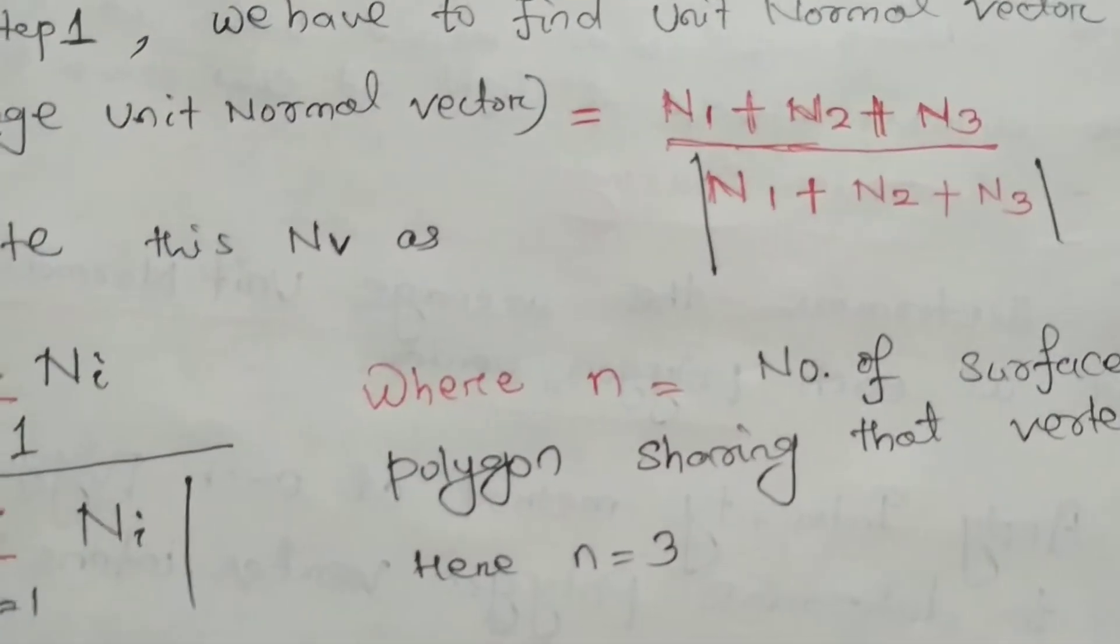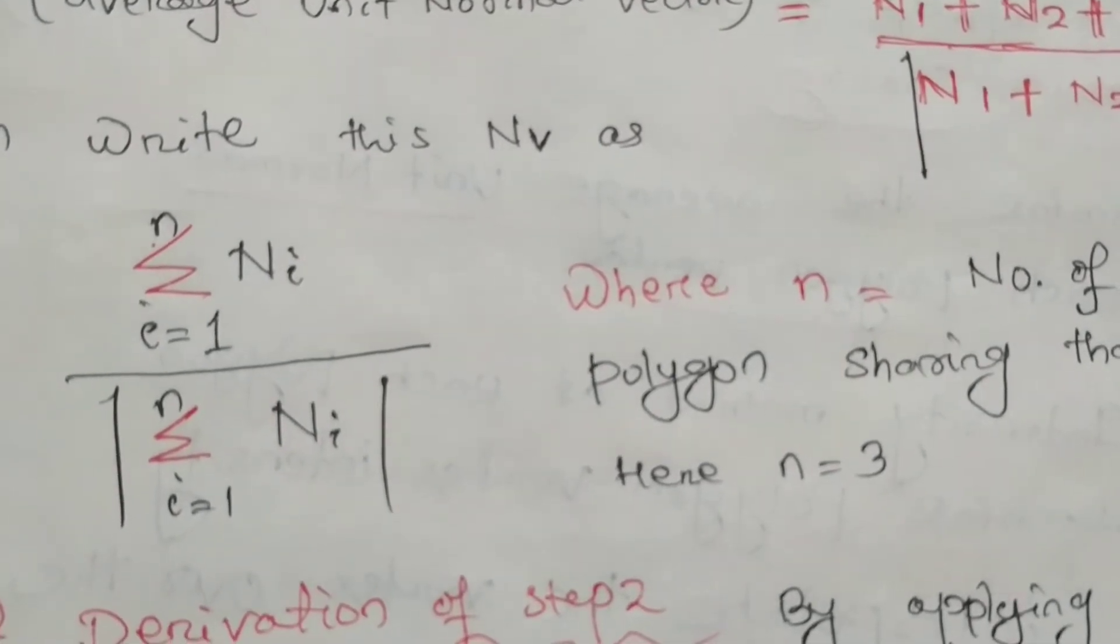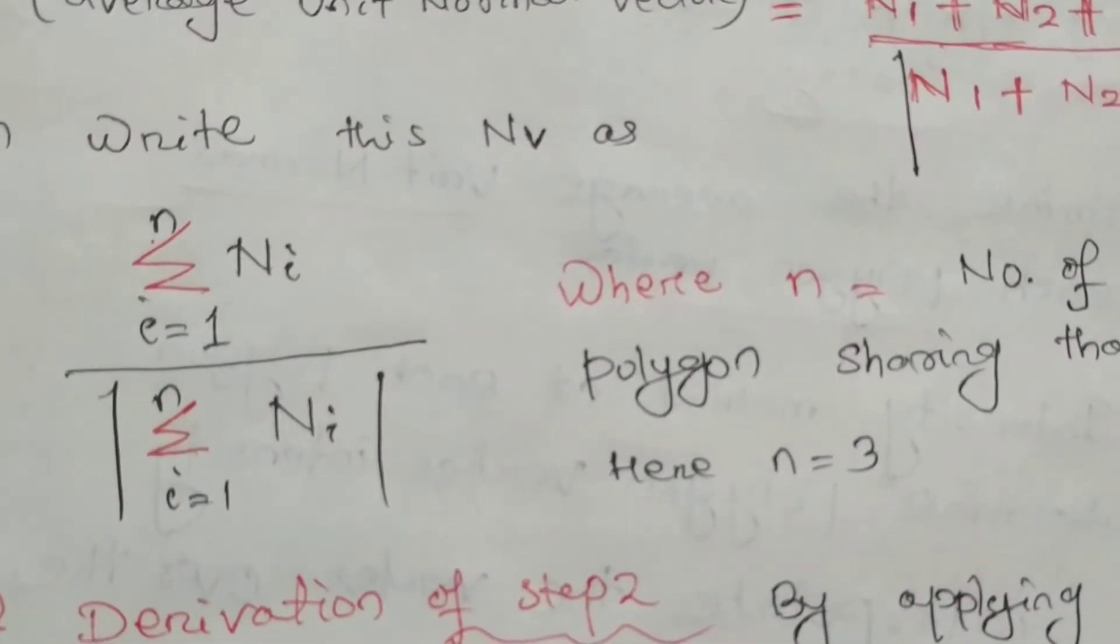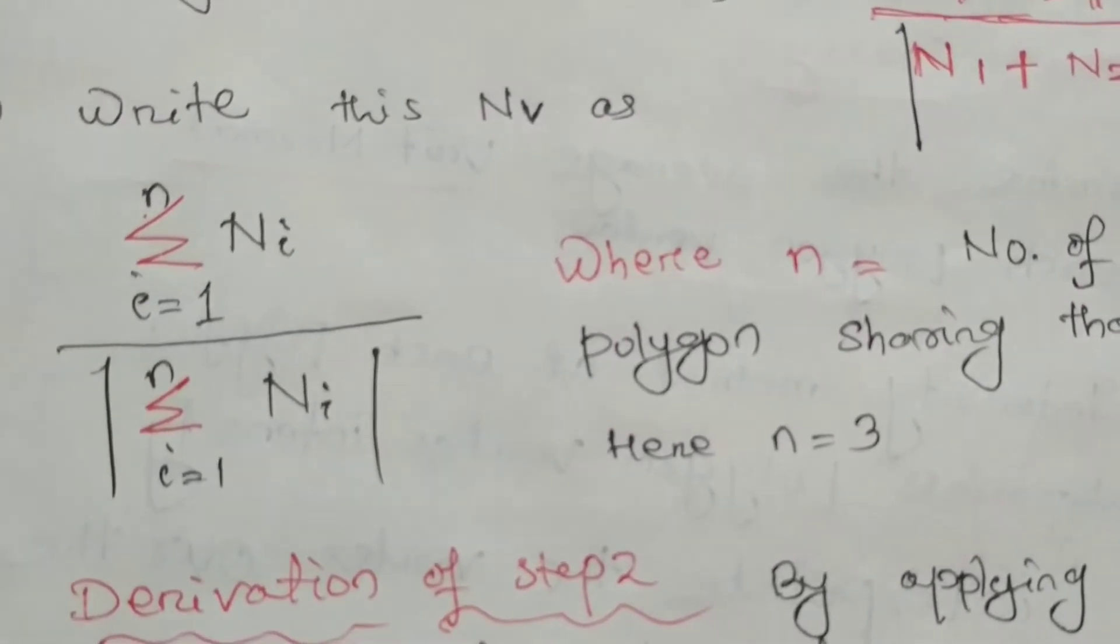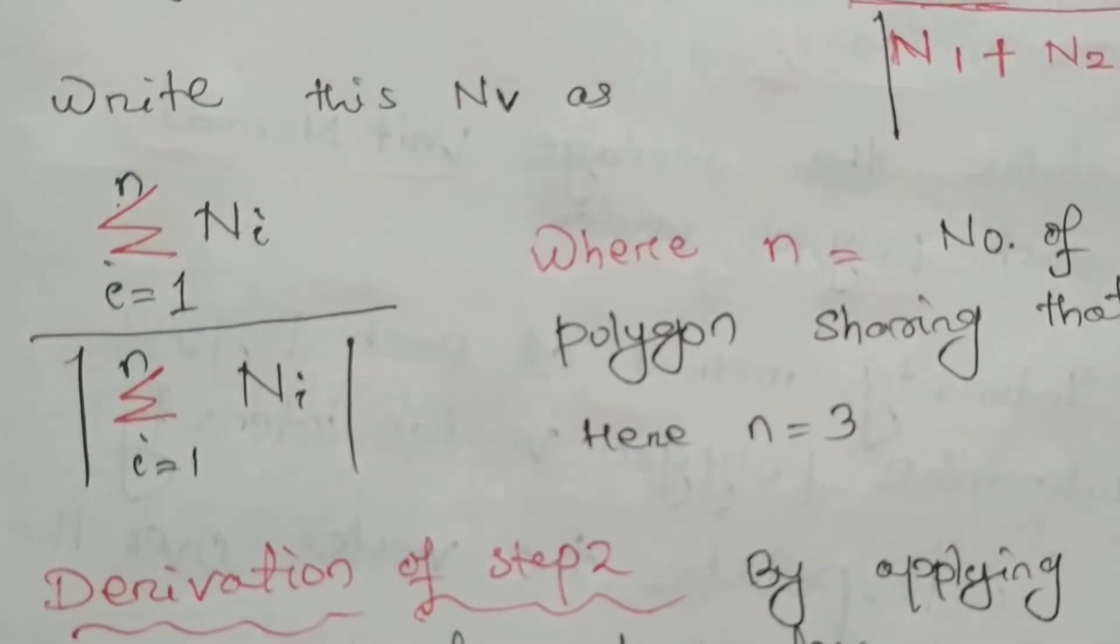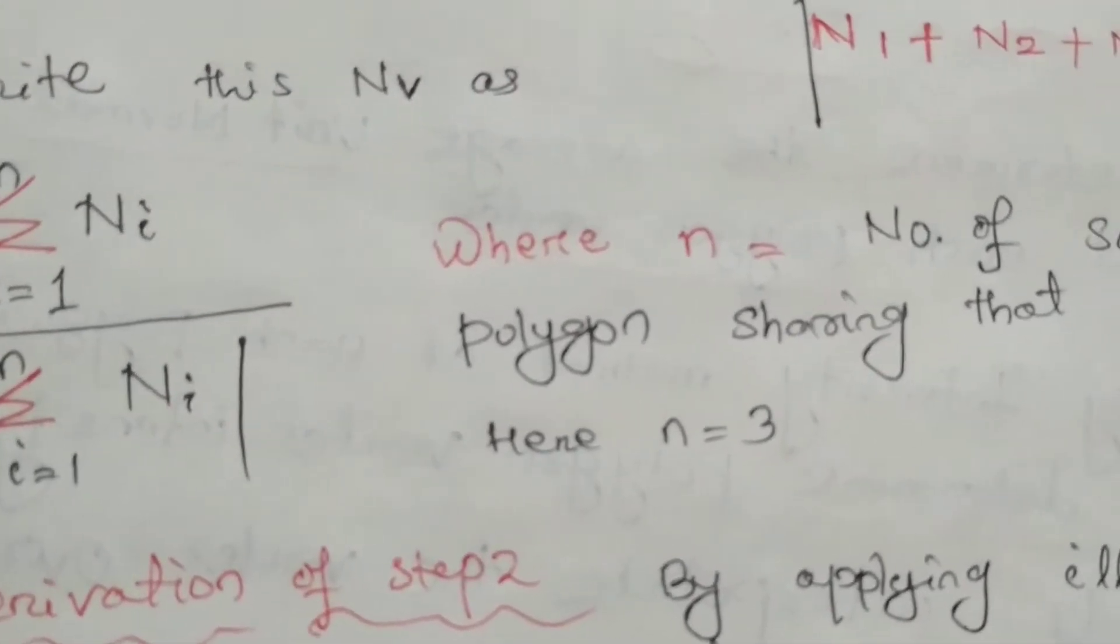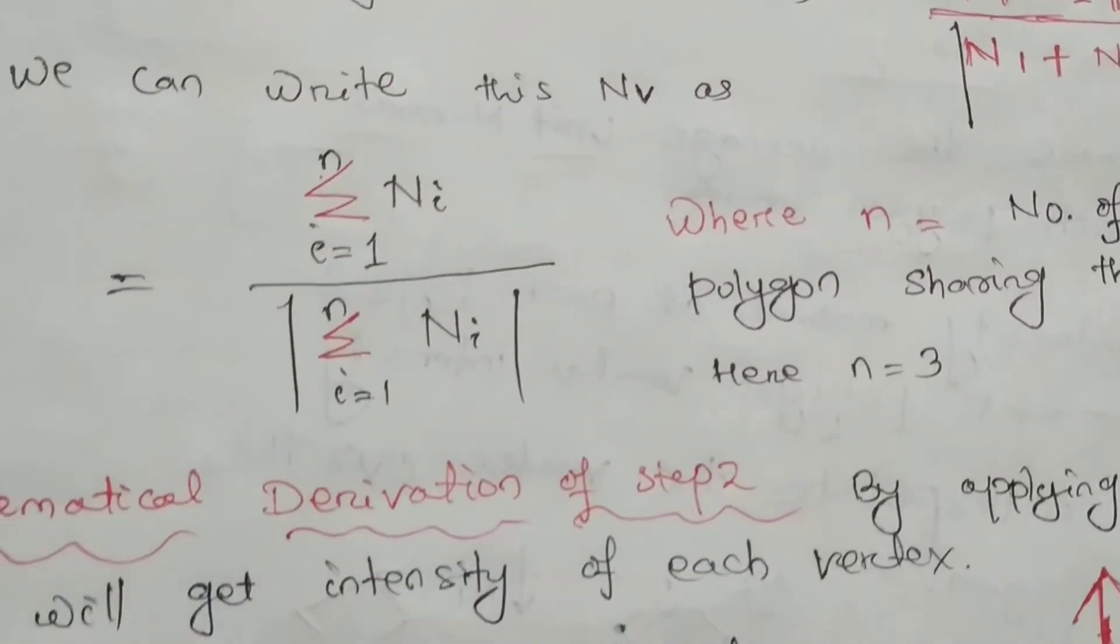We can write this mathematically as: summation of Ni from i equals 1 to N, divided by the magnitude of summation of Ni from i equals 1 to N. Where N is 3 in this diagram, because we have three surfaces. And the first step is finished. Average normal vector we have found.